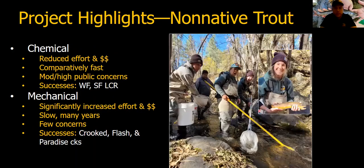We'll now switch gears to mention some of the projects we've been working on, covering non-native trout eradication efforts, barriers, and stocking. When dealing with non-native trout, the options often come down to either chemical or mechanical eradication. Chemical treatment has been used to kill all fish in Apache trout recovery streams and is typically more successful, faster, and can be completed with less effort and cost than mechanical eradication. However, chemical treatments do tend to raise greater public concerns. The last chemical treatments for Apache trout recovery were conducted in the West Fork and South Fork Little Colorado recovery streams in 2008.